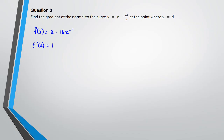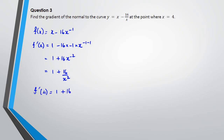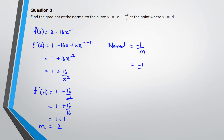Writing f(x) = x - 16x⁻¹, differentiating gives f'(x) = 1 + 16x⁻². We can rewrite this as 1 + 16/x². At x = 4: f'(4) = 1 + 16/16 = 1 + 1 = 2. So the tangent gradient is 2, which means the gradient of the normal is -1/m = -1/2. That's the answer.